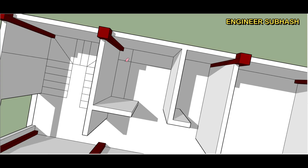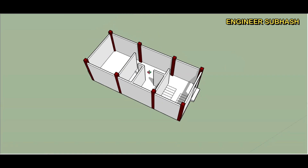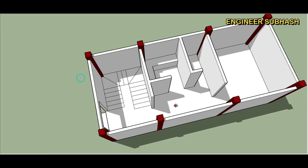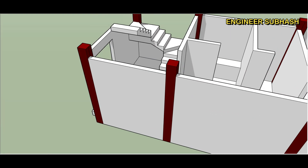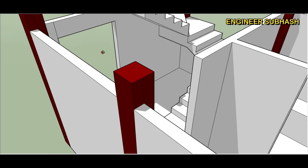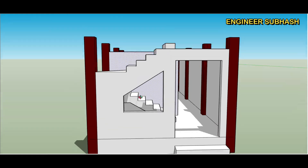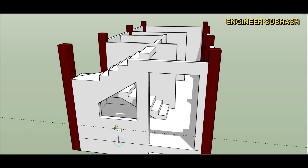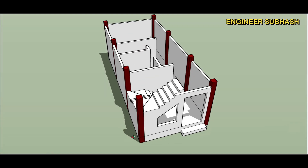The normal view will be changed from the 3D state. Then we will change the 3D state to the regular state. We will add the first part of the window, then add 2 feet 4 inches. After adding the first part of the window, we will add some furniture.